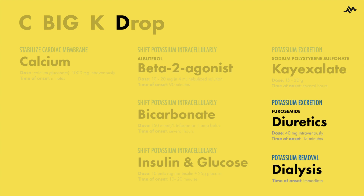D stands for diuretics and dialysis. Furosemide is a loop diuretic which causes an increase in potassium loss in the urine, resulting in an overall decrease in potassium levels from the body. The time of onset is 15 minutes, where a typical 40mg intravenous dose can be repeated every 12 hours.